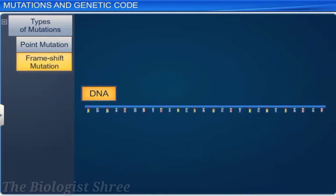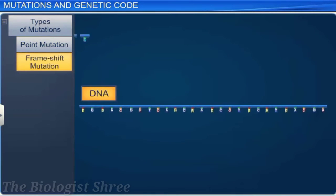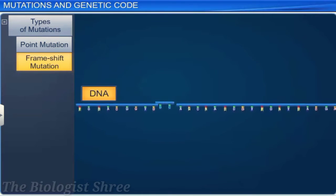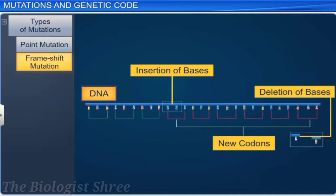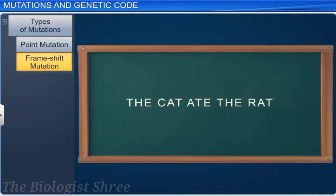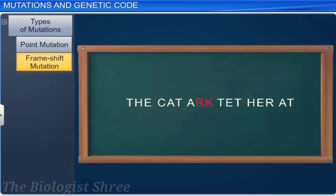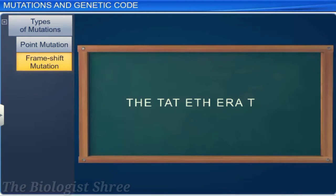In the case of frame shift mutation, two or more bases are either inserted or deleted from the DNA template. For instance, in our example, if we insert two letters R and K, it will change the reading frame, and the altered statement will read 'the cat arc tet her at.' Whereas if we delete two letters, one C and one A, from the original statement, the altered statement will read 'the tat ethe era t.'